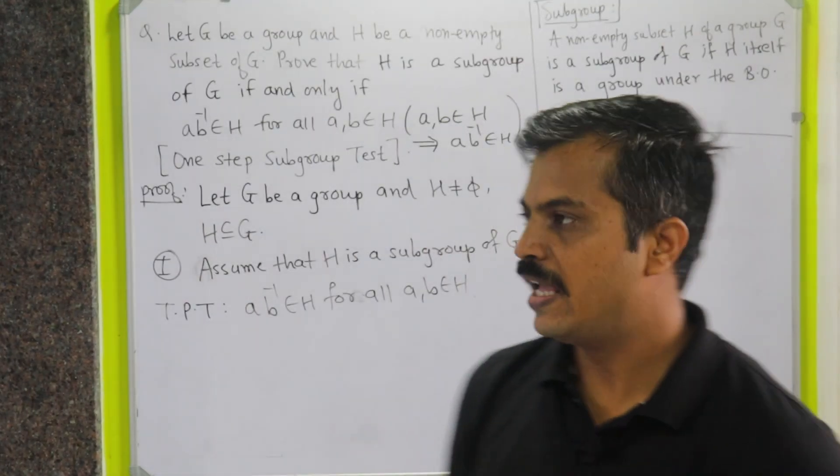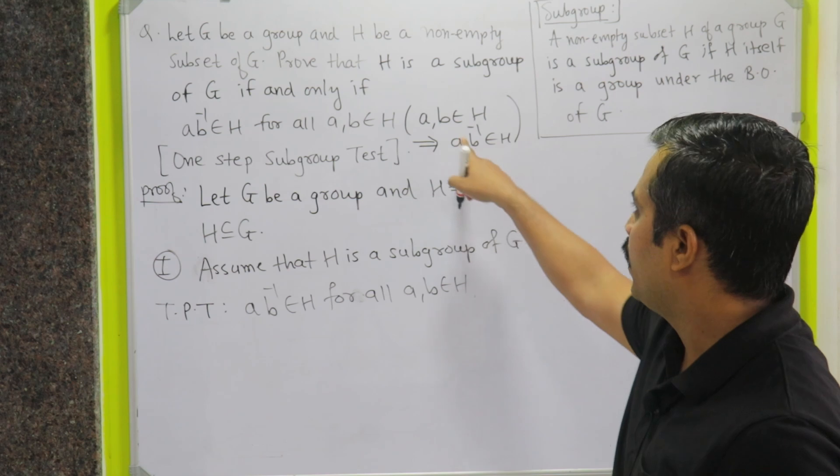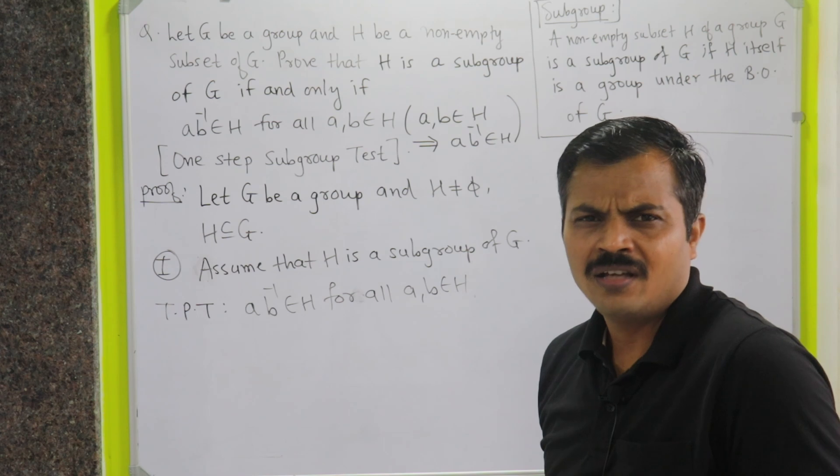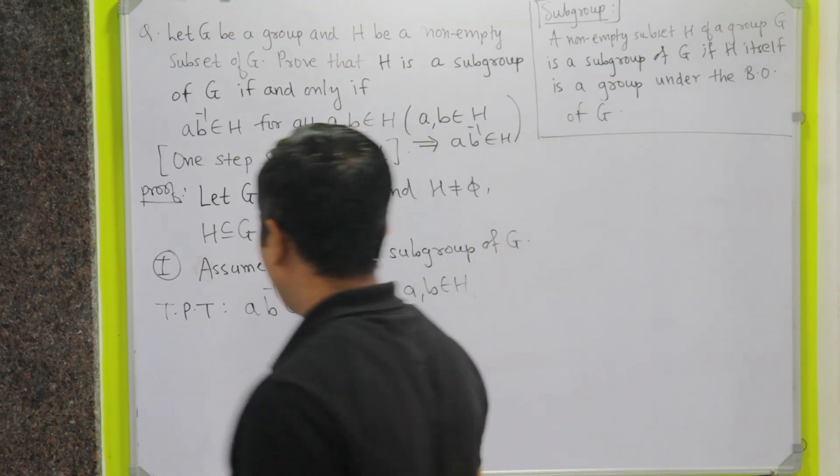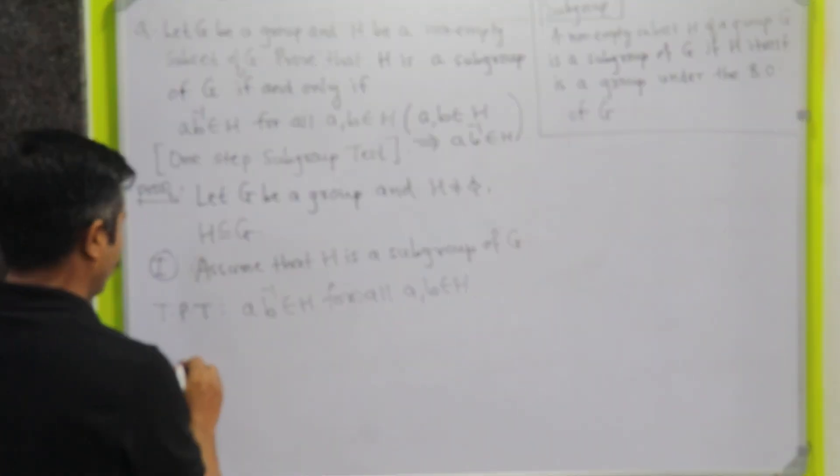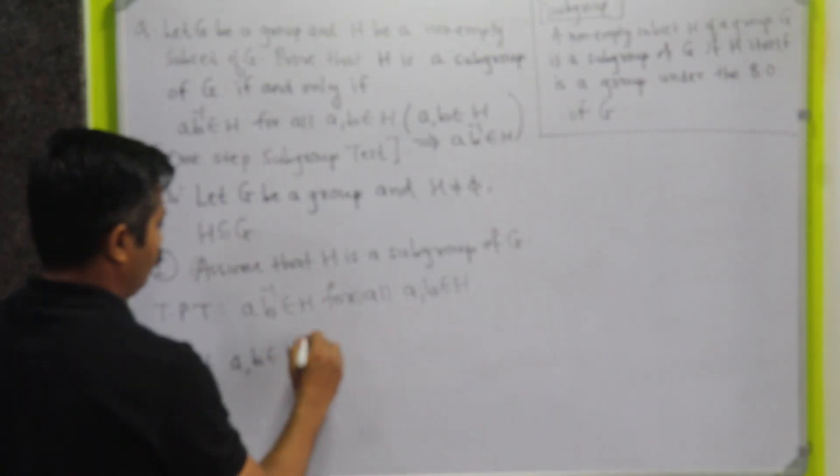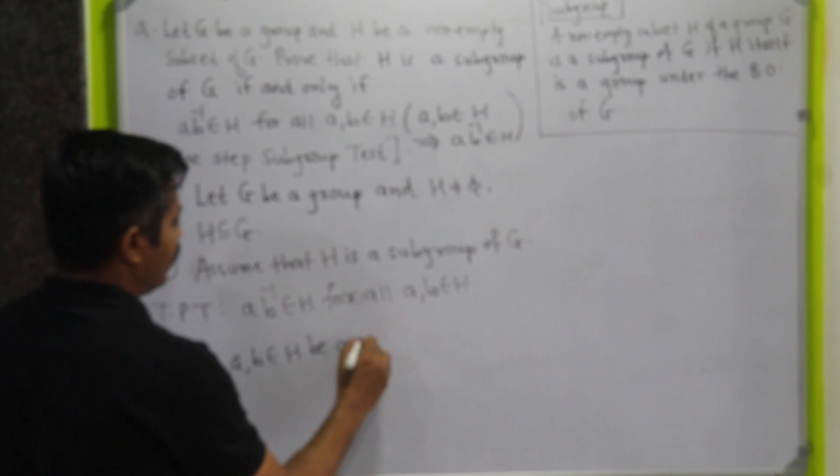Now, in order to prove this, as I explained earlier, we have to take two elements of H and show that AB inverse lies in H. Let us begin then. I will say let A, B belongs to H be any elements.